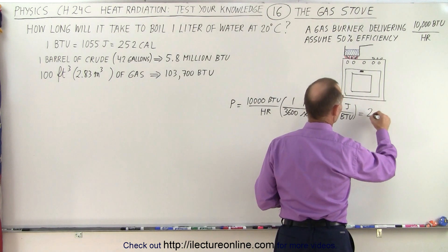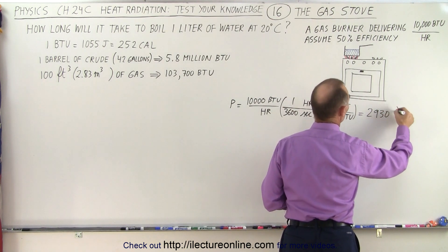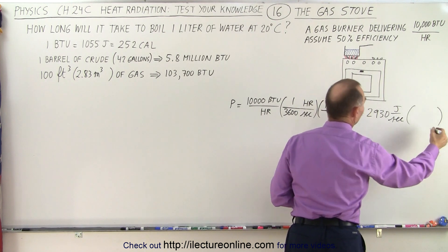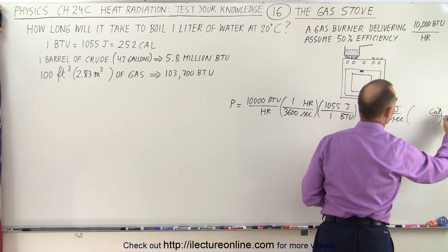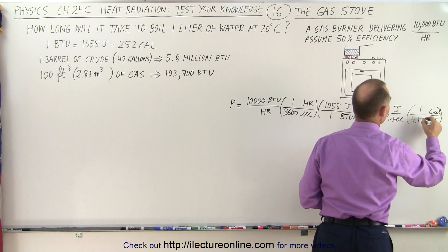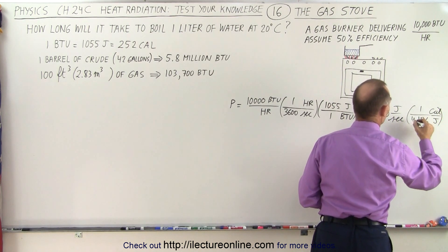And then we can multiply it times, we want to go to calories. So, calories per joule. And we have 1 calorie is 4.186 joules. Like that.